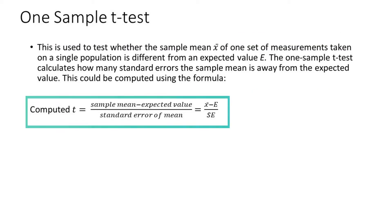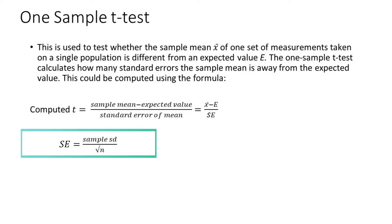computed t equals sample mean minus expected value divided by the standard error of the mean. The standard error of the mean can be computed by dividing the standard deviation by the square root of n or number of samples.